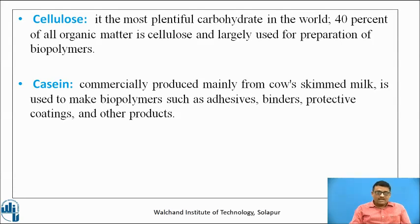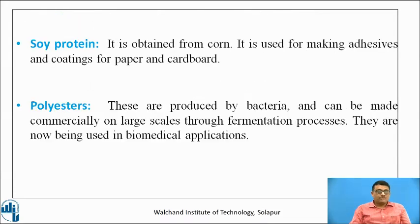Casein is commercially produced mainly from cow's skimmed milk. It is used to make biopolymers such as adhesives, binders, protective coatings, and other products. Soya protein is obtained from corn and is used for making adhesives and coatings for paper and cardboard. Polyester is also an example of a biopolymer — these are produced by bacteria and can be made commercially on large scales through fermentation. They are now being used in biomedical applications.